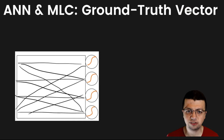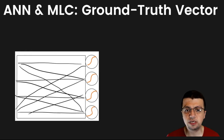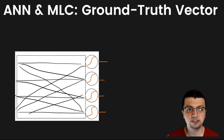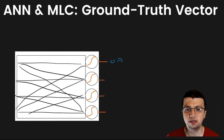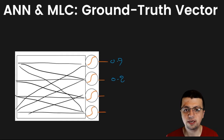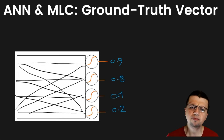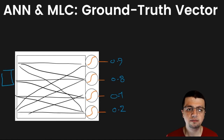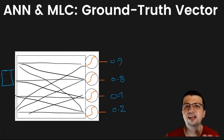This is your artificial neural net. You've got four classes. This is a multi-label classification problem, and each neuron is a sigmoid function, so each neuron can output a value between zero and one — that's the property of your sigmoid function. Let's say this one is 0.9, this one is 0.8, this one is 0.1, and this one is 0.2.